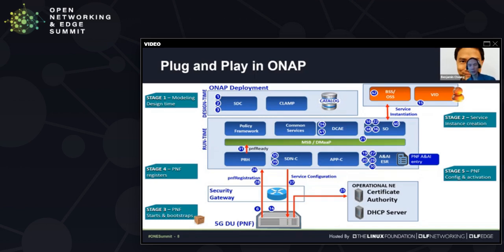Finally in stage five, the PNF can be configured and activated. The demo showed this flow — going through the paces of PRH to demonstrate that ONAP can see and recognize a PNF. That's what was demoed.